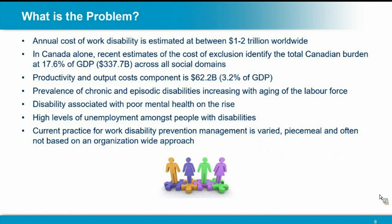Framing the problem: work disability is very costly, both in Canada and internationally — estimated between one and two trillion dollars worldwide. Recent work in Canada identified the cost of exclusion due to disability at about 17.6% of GDP across all social domains, with the productivity and output component alone at 62.2 billion dollars or 3.2% of GDP. The prevalence of chronic and episodic disabilities is increasing as the labor force ages, and disability associated with poor mental health is also on the rise.